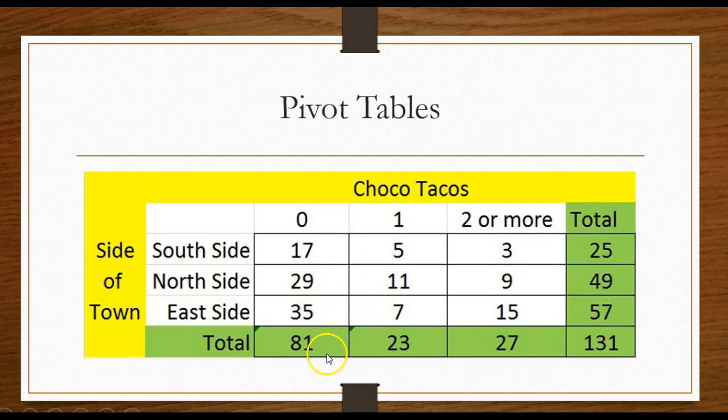And I can also see the total number of customers who did not buy any Choco Tacos, who bought one, and who bought two or more. These totals down at the bottom should add from left to right, get 131, and get the same sum as what these totals add from top to bottom.